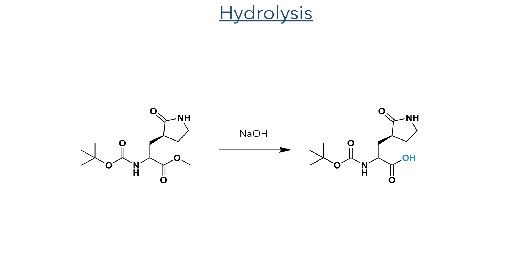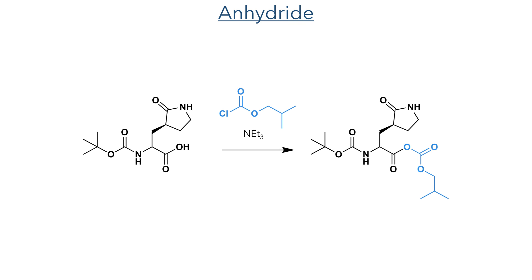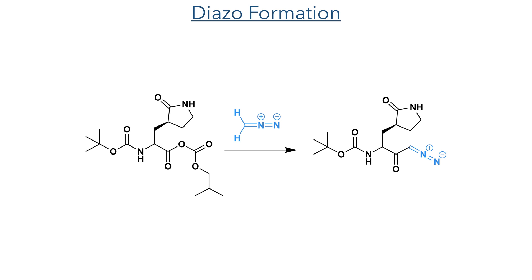The remaining methyl ester was then hydrolyzed using sodium hydroxide and aqueous methanol. The resulting acid was then reacted with isobutyl chloroformate with triethylamine as a base. This highly reactive intermediate was then reacted with diazomethane to install a diazo functional group alpha to the ketone.